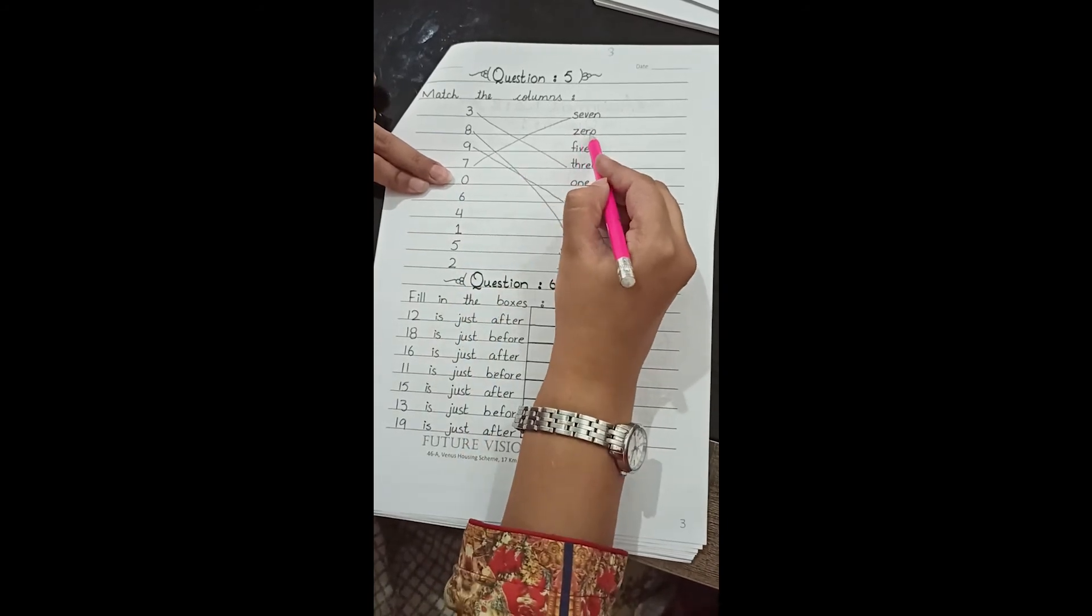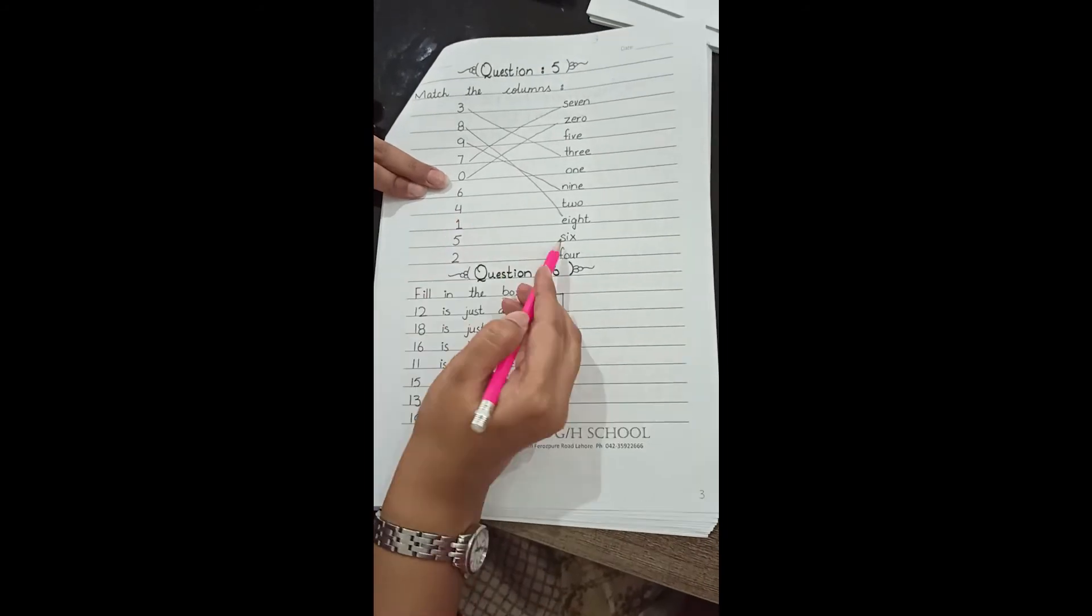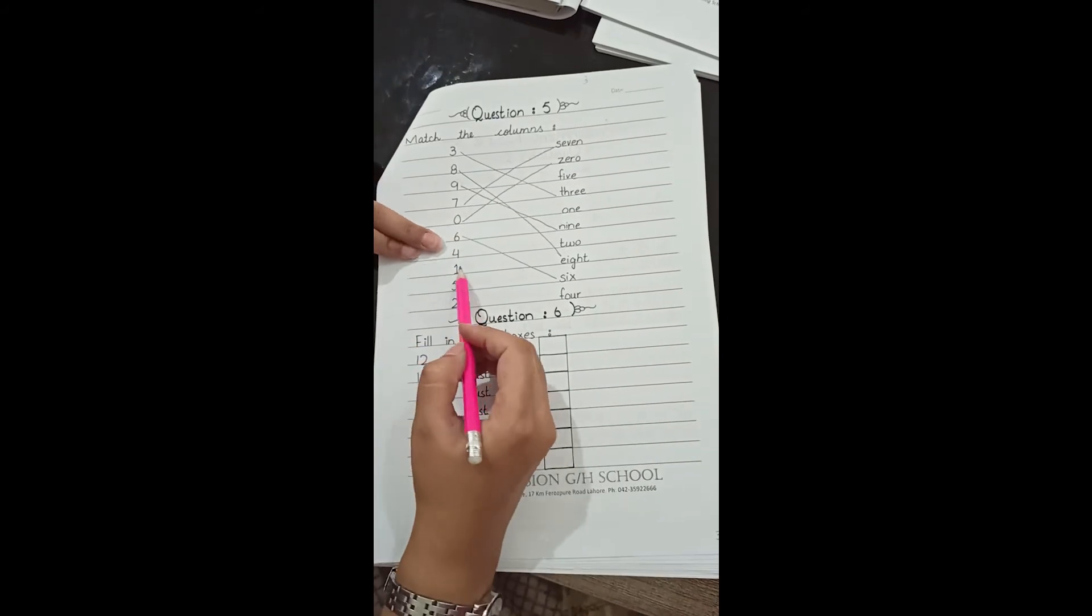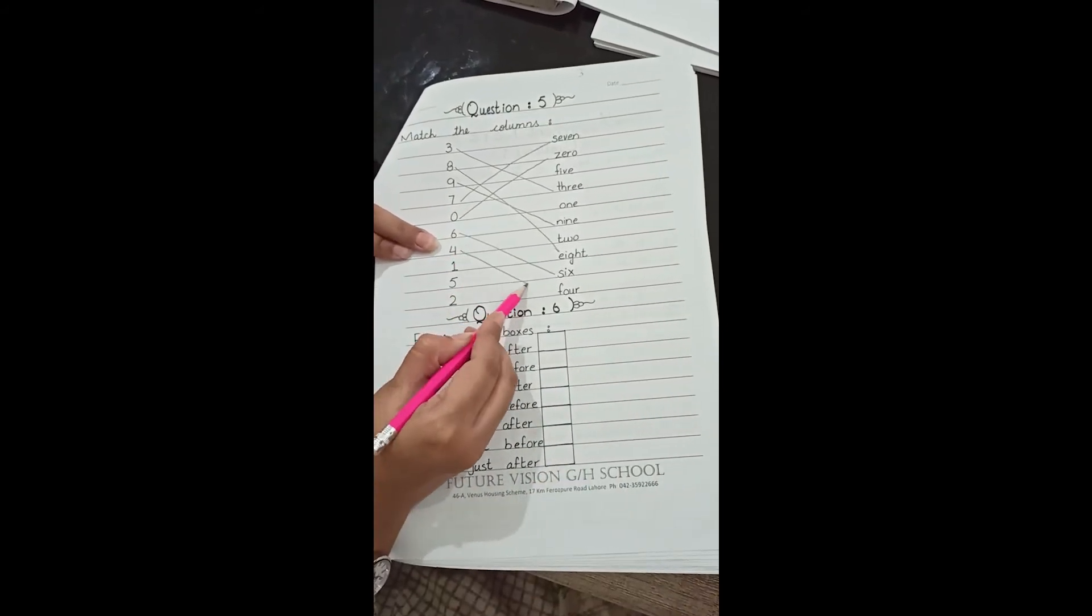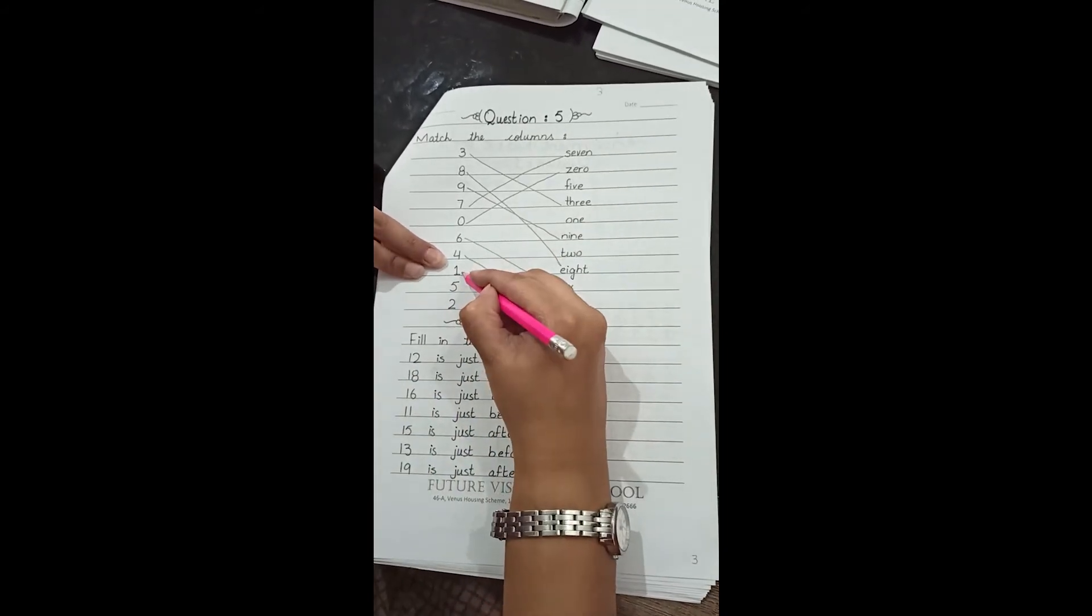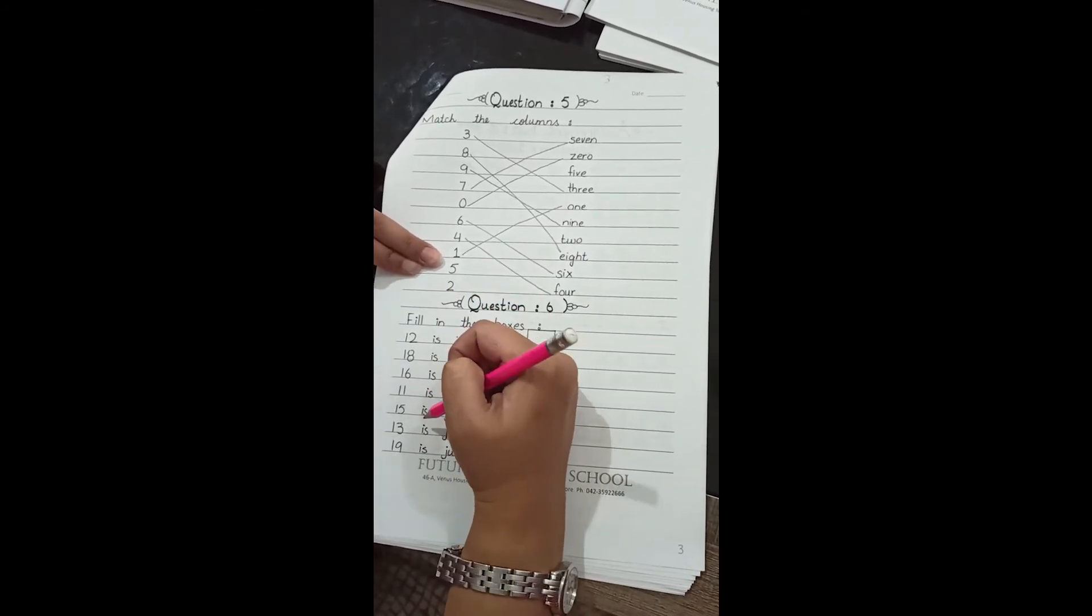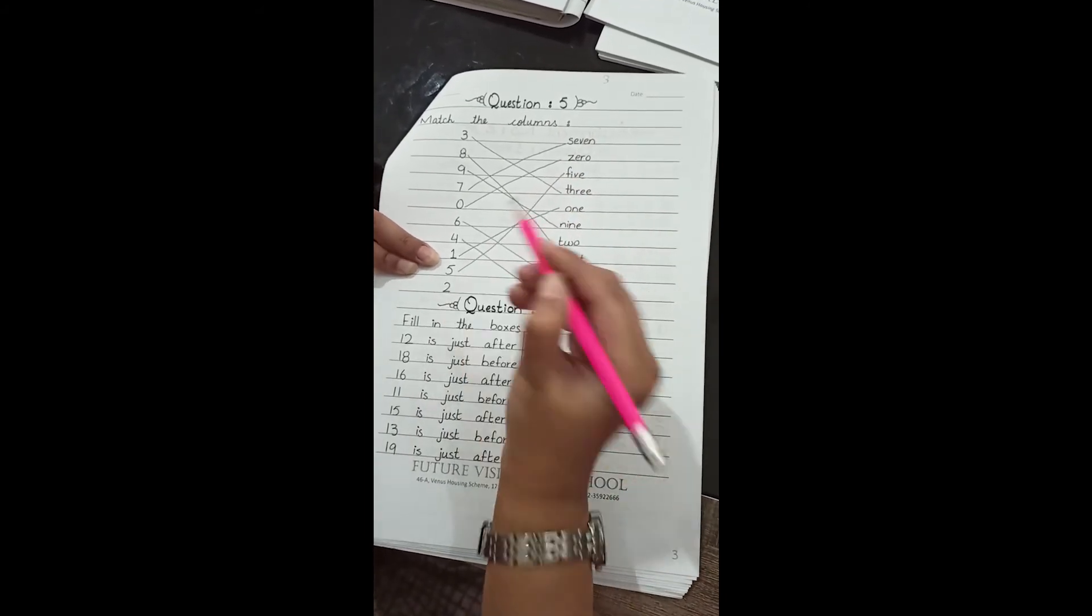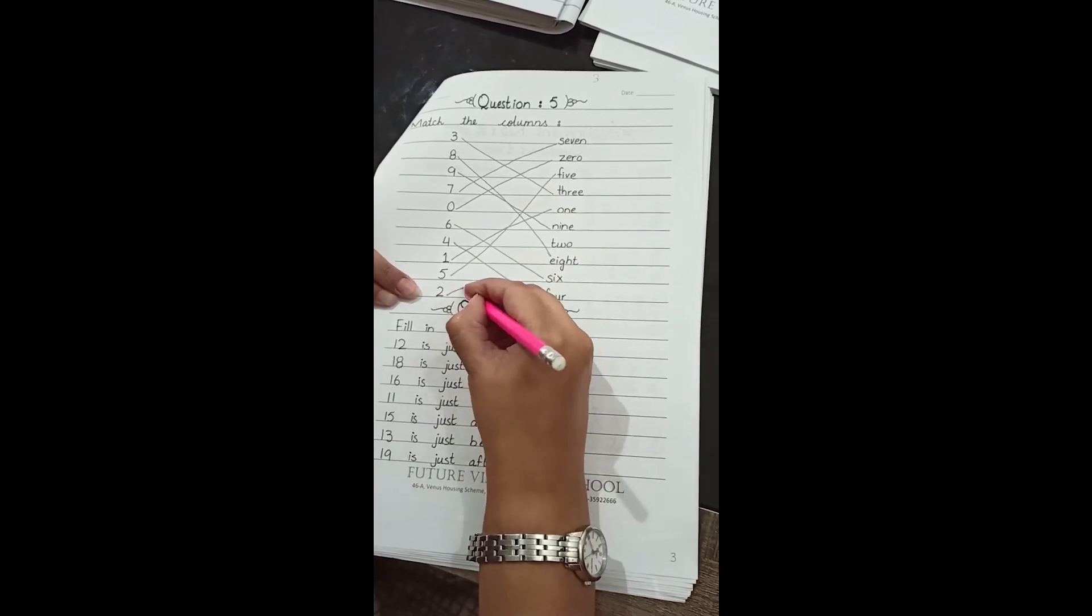0: z-e-r-o, match 0 with 0. 6: s-i-x, match 6. 4: f-o-u-r, where is 4? Here is 4. 1: o-n-e, match 1 with 1. Very good students. 5: f-i-v-e, where is 5? Search 5. Here it is. Very good. 2: t-w-o, match 2 with 2.